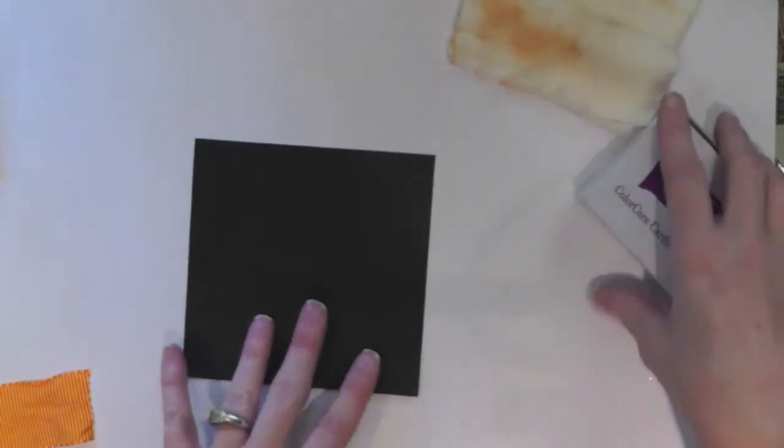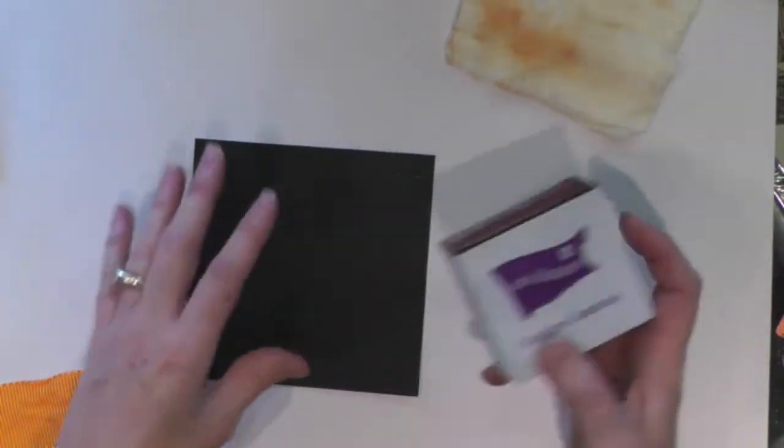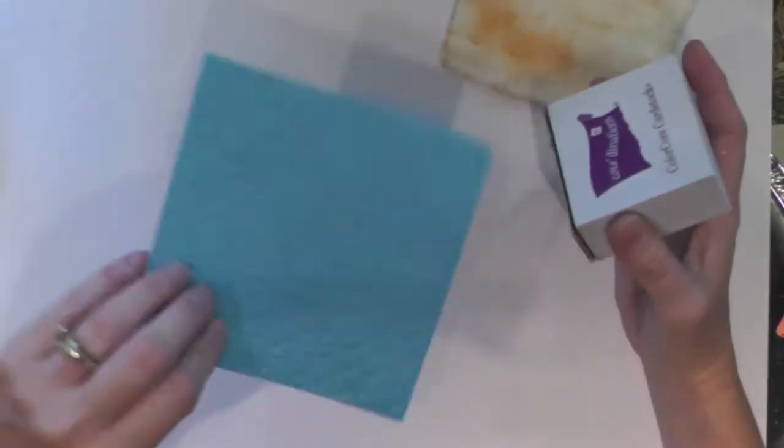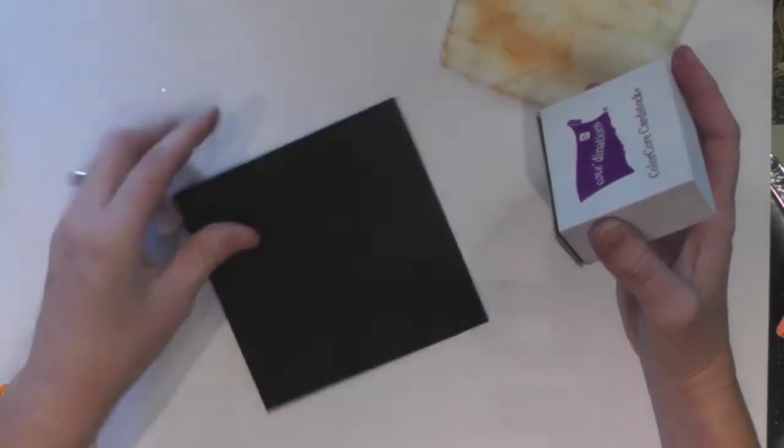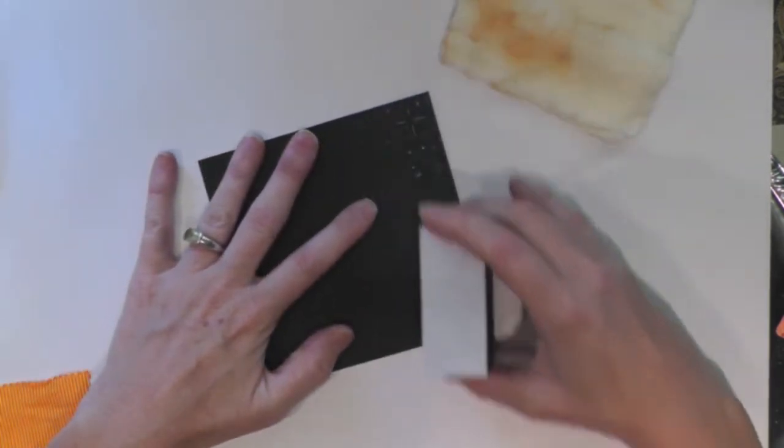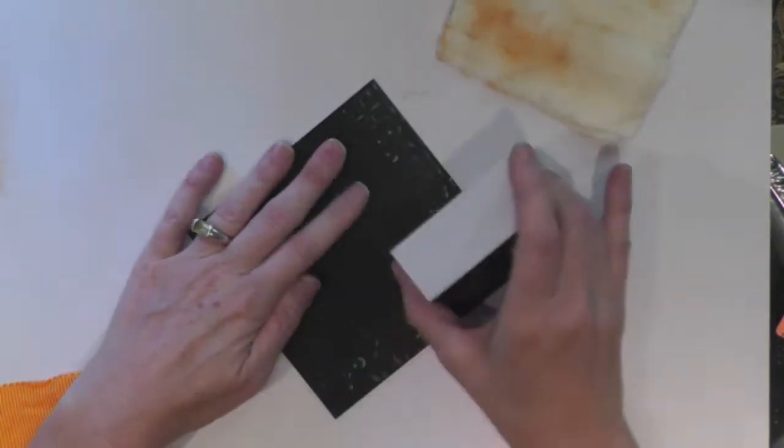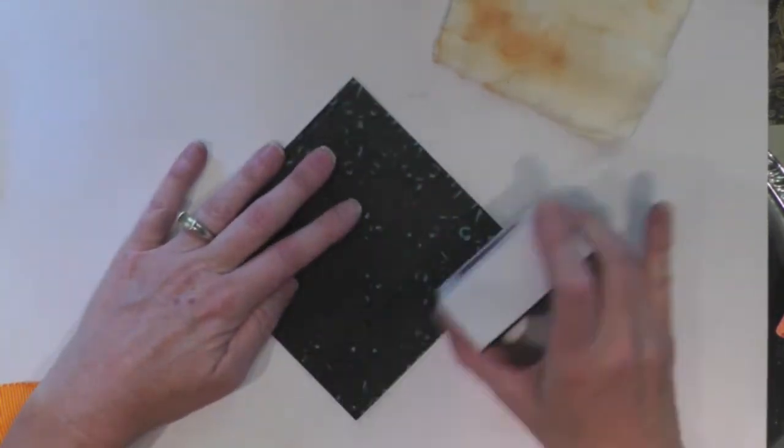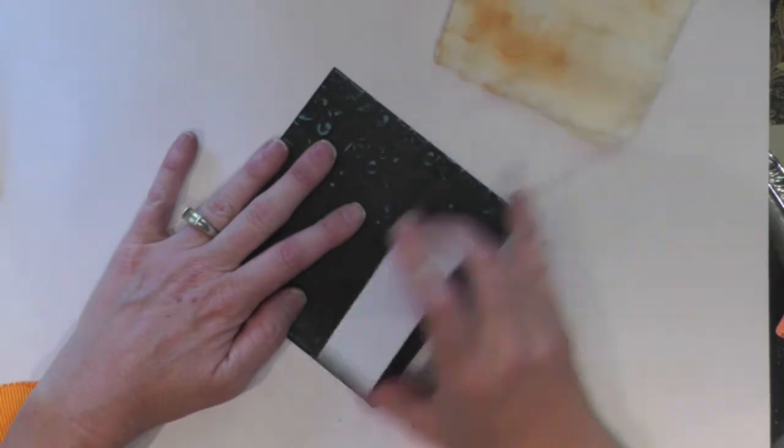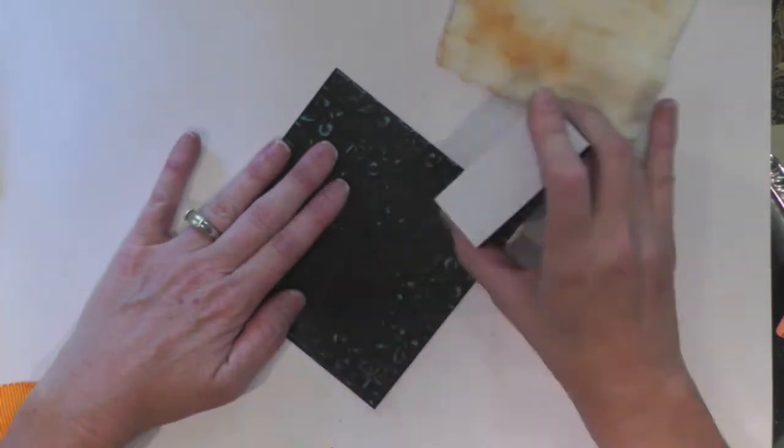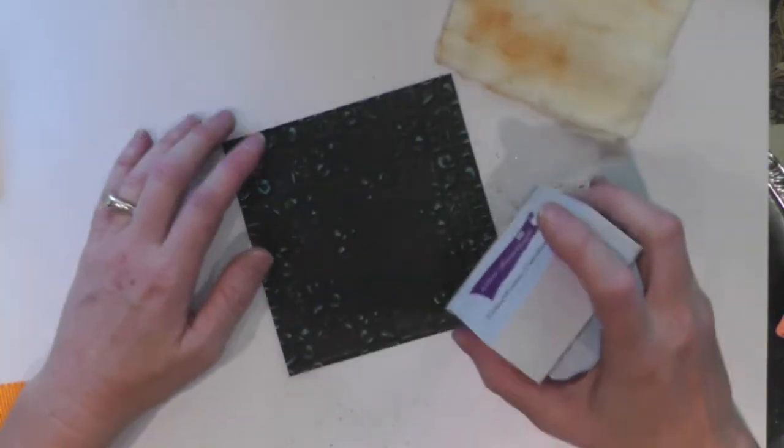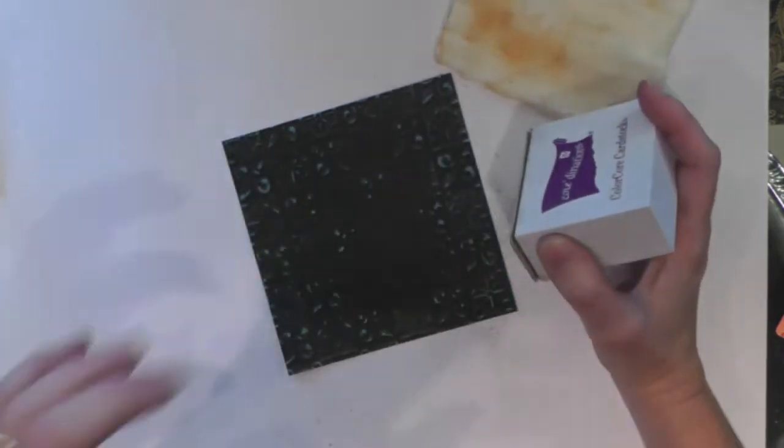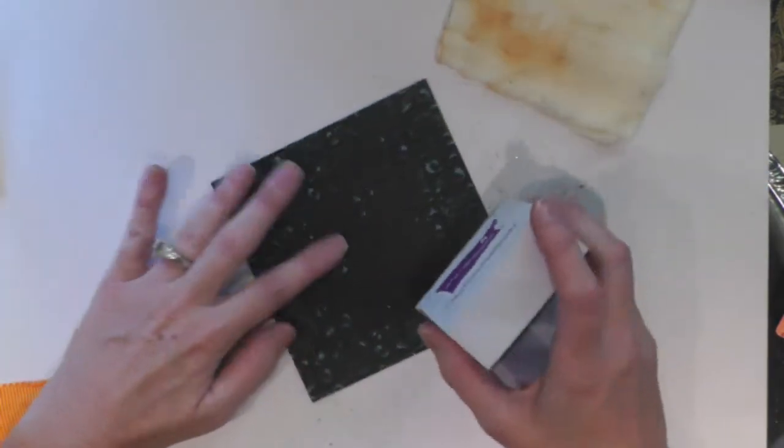Now here's where the magic comes in. This card stock has a color on the other side and it gets exposed when you hit it with the sanding block. How fun is that! So when I first did this, I went literally right through the paper. I got a little too excited.